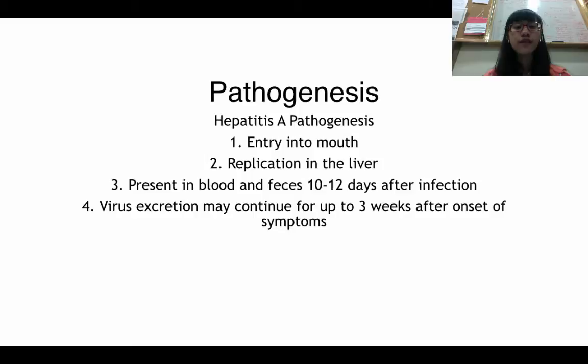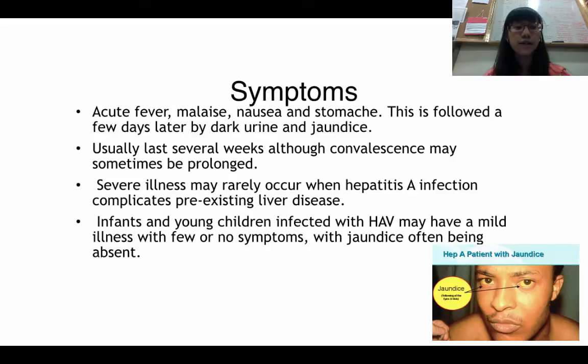What is the pathogenesis? There are four steps in Hepatitis A pathogenesis. The first step is entry into the mouth. The second stage is replication in the liver. The third stage is the virus present in blood and feces 10 to 12 days after infection. Finally, virus excretion may continue for up to three weeks prior to the onset of symptoms.